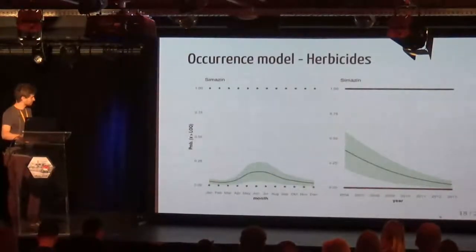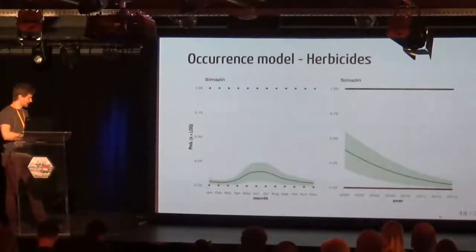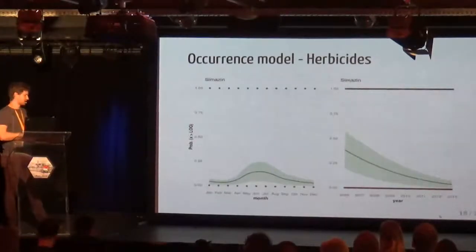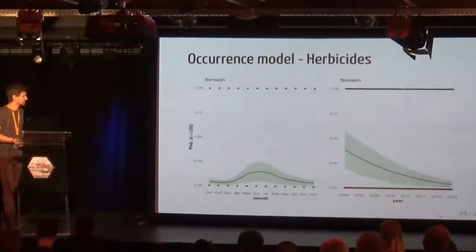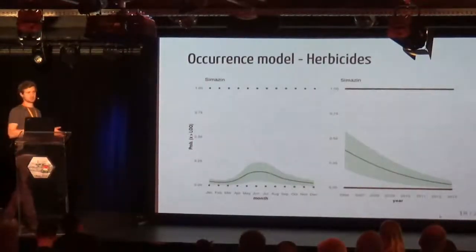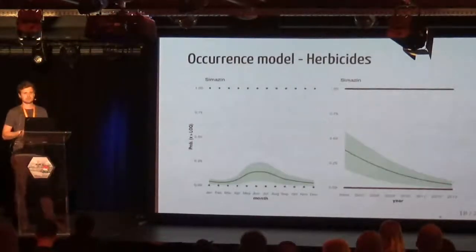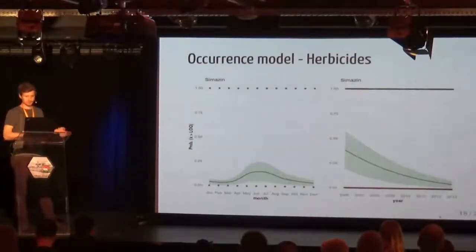We also did this for simazine, a substance similar to terbuthylazine. It shows a similar seasonal pattern, but with a slightly broader variety. On the long term, simazine shows a decrease, which also makes sense as it was prohibited around 2000 for usage in Europe.